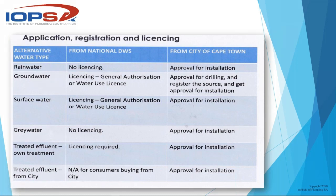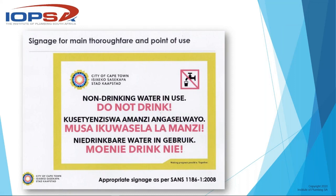It's not just about putting an RPZ valve in — there is also signage that must be put up. There must be signage on all main thoroughfares and points of use. So if you've got a tap on a rainwater system, you have to have a sign that says 'non-drinking water in use — do not drink' in your three main languages: English, Afrikaans, and an African language. Nobody can accidentally drink contaminated water, so you must make sure it is well signposted.